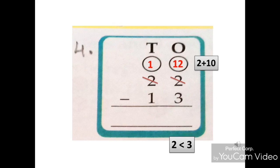Now 12 ones minus 3 ones is equal to 9 ones. Write 9 under 1's column.